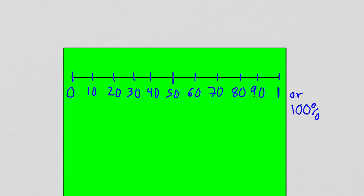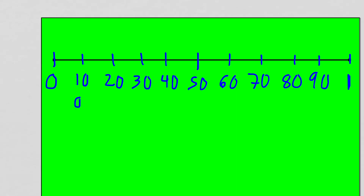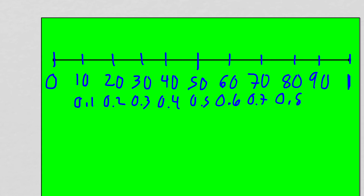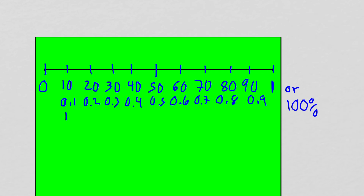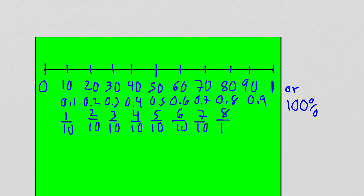If we think in decimals, the sections represent 0.1, 0.2, 0.3, 0.4, 0.5, 0.6, 0.7, 0.8, 0.9. And in fractions, that's 1 tenth, 2 tenths, 3 tenths, 4 tenths, 5 tenths, 6 tenths, 7 tenths, 8 tenths, 9 tenths, and 10 tenths — which is 100% or 1 whole.